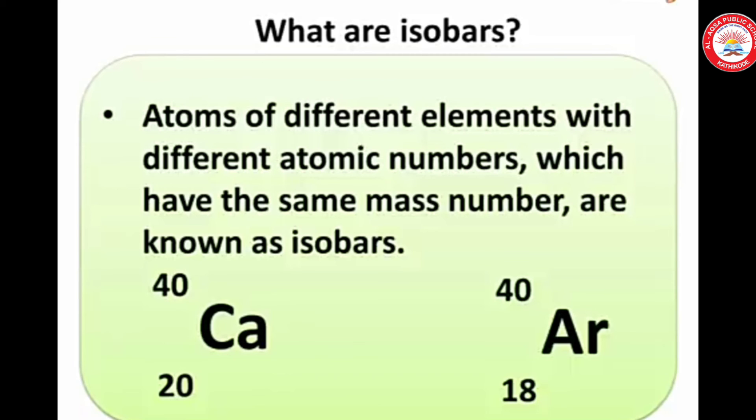Atoms of different elements with different atomic numbers which have the same mass number are known as isobars. So, here calcium and argon are isobars.